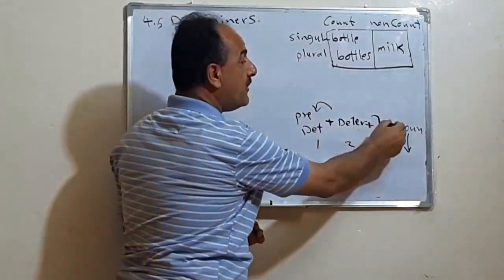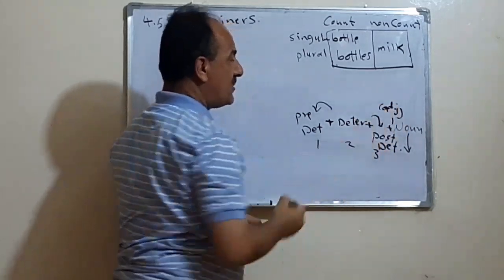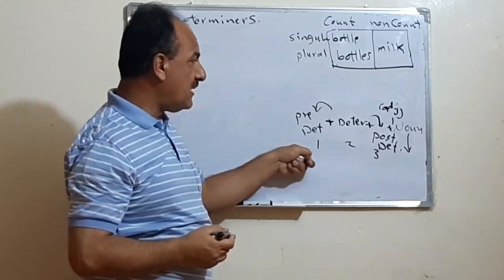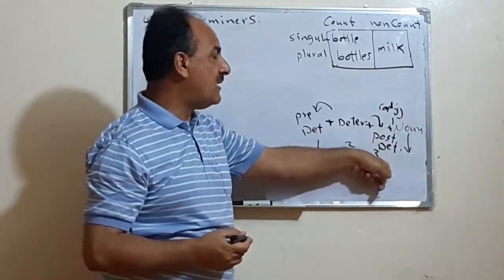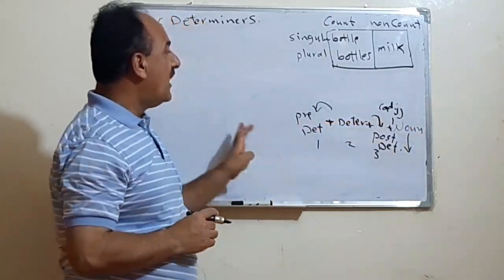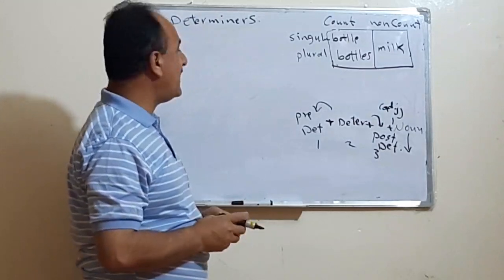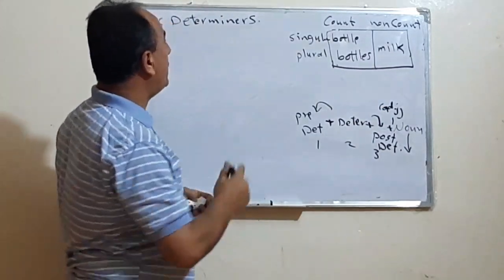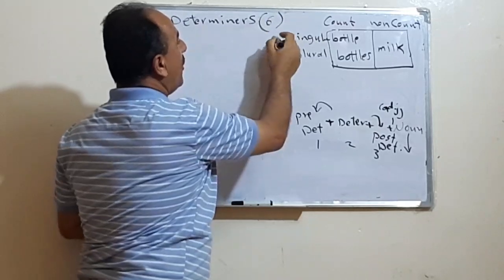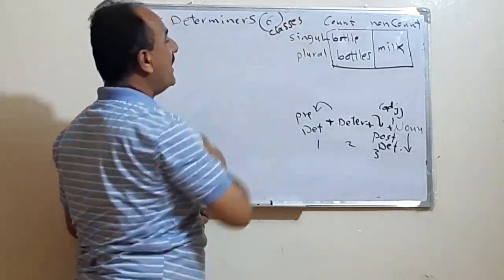And sometimes before the noun we also have an adjective. We will discuss the arrangement of predeterminers, determiners, postdeterminers, and adjectives in detail later. Now we start with determiners. We have six classes or types of determiners.